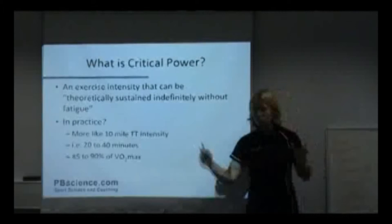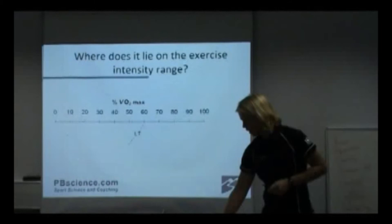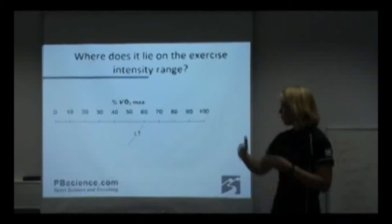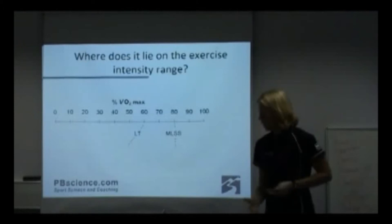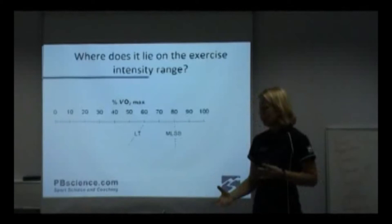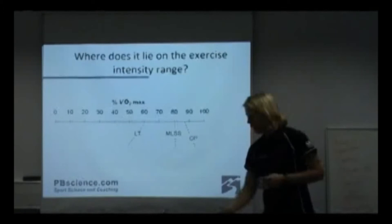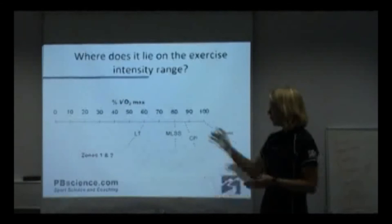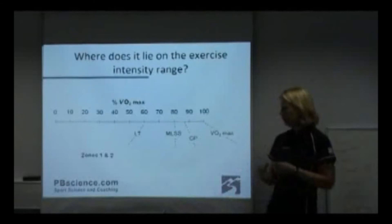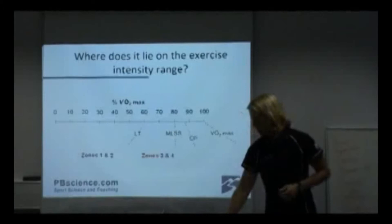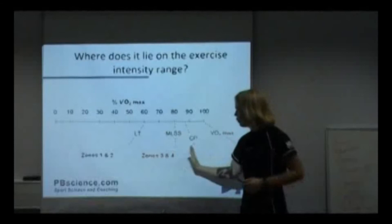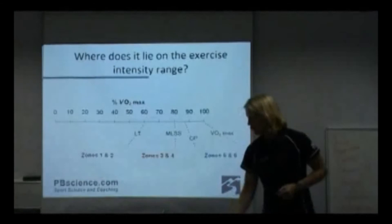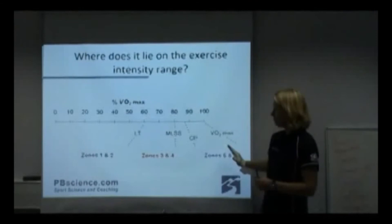Just a quick run-through of those physiological landmarks to give you an idea where critical power lies. Lactate threshold is about 60% of VO2 max. The maximal lactate steady state — that's that one-hour intensity — or for those who know the concept, functional threshold power, is about 80%. Critical power is above that and between VO2 max. As a physiologist and coach I can then define exercise training zones around those parameters. Zones 1 and 2 are below your first lactate threshold; zones 3 and 4 are between lactate threshold and maximal lactate steady state; zone 5 is around critical power, and zone 6 is anything above it.